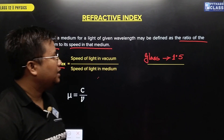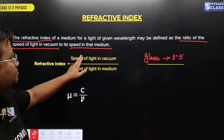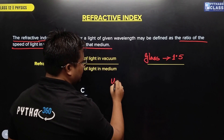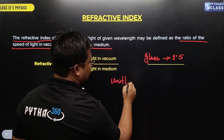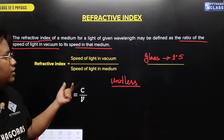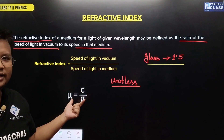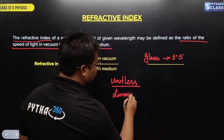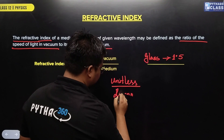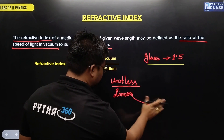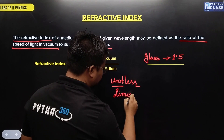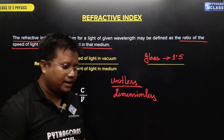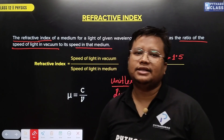The refractive index is the speed of light in vacuum divided by the speed of light in medium. Therefore, refractive index is unitless — it is a quantity which is unitless and dimensionless.